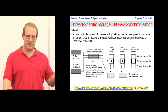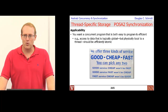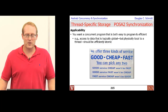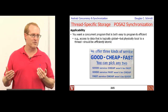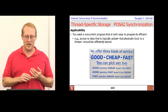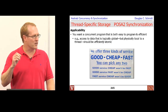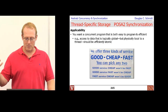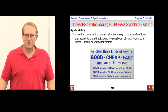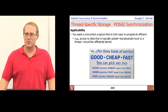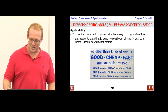You'd want to use this pattern if you want a concurrent program that is both easy to program and efficient. Efficient means you don't require special-purpose programming tricks — you just want to access objects and have them be magically thread-safe and atomic without knowing anything about locking. Here's a case where you get simplicity of programming and efficiency, though there are some limitations we'll discuss later.